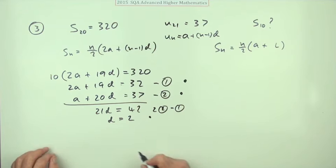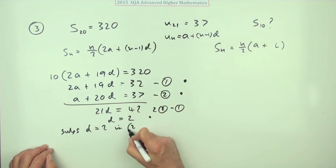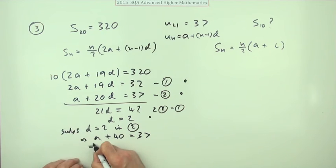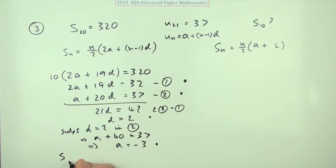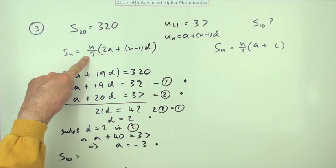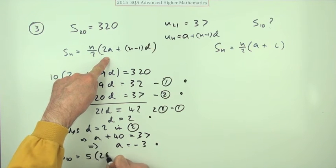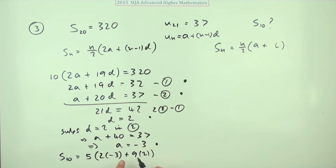The marks come from establishing those two equations. Now to find a, substitute d = 2 into equation two: a + 40 = 37, so a = −3. That's the fourth mark. Finally, the sum of the first 10 terms: S_10 = 10/2 × (2×(−3) + 9×2) = 5 × (−6 + 18) = 5 × 12 = 60. That's the fifth mark.